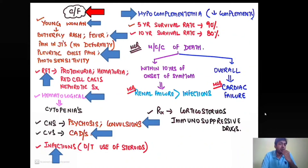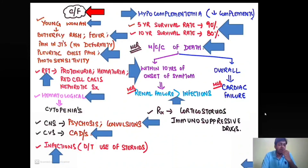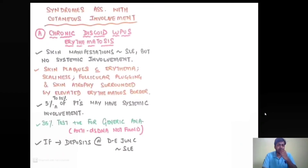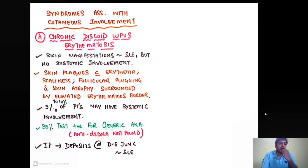There is hypocomplementemia because complements deposit along with immune complexes, lowering serum complement levels. The five-year survival rate in SLE is 90% and the ten-year survival rate is 80%. The most common cause of death within 10 years of onset is renal failure, more so than infections. Overall, the most common cause of death is cardiac failure. Treatment, as with other autoimmune diseases, is with steroids and immunosuppressive drugs.